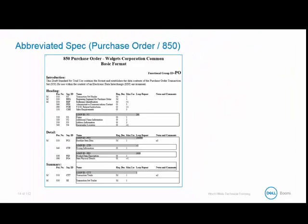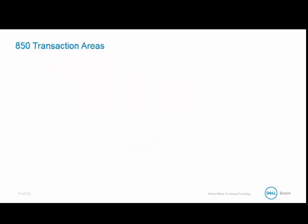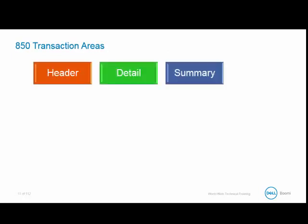I mapped EDI in an earlier life and needed to know each piece of information on my spec. However, in AtomSphere there's only one thing I need to know, and that is the segment ID — AtomSphere will do the rest. Within the file, there are three areas or sections known as the header, the body, and the summary, and each has both mandatory and optional data.